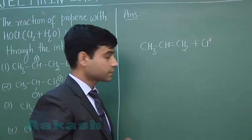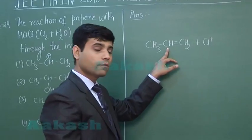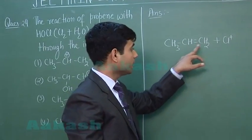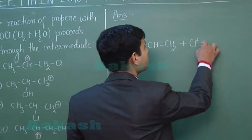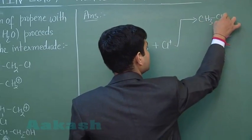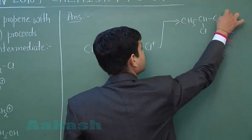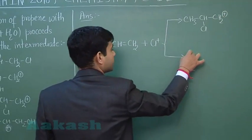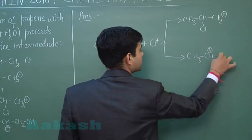There are 2 possibilities. Either Cl+ attacks on the first carbon and a carbocation is formed on the other carbon, or Cl+ attacks on the second carbon and the carbocation forms elsewhere. The two possible intermediates are: CH3-CHCl-CH2+ and CH3-CH+-CH2Cl.